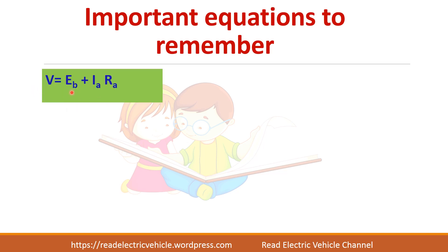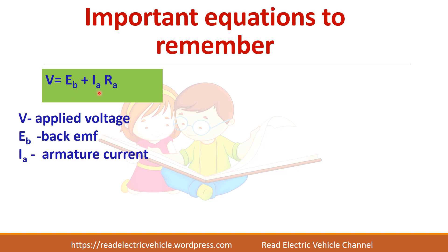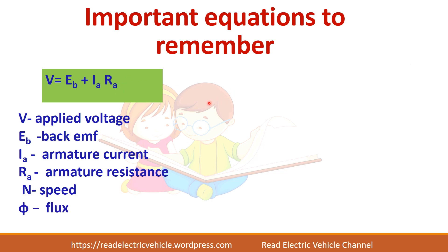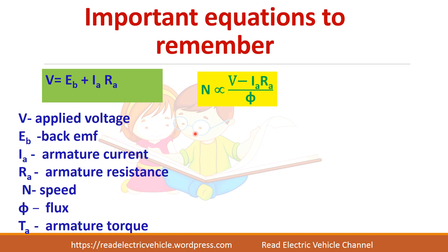Before going to the characteristics, let us recall some important formulas. V = Eb + Ia·Ra, where V is the applied voltage, Eb is the back EMF, Ia is the armature current, and Ra is the armature resistance. Speed n is directly proportional to back EMF and inversely proportional to flux, so n ∝ (V − Ia·Ra) / φ. Torque Ta is directly proportional to flux times armature current: Ta ∝ φ · Ia.